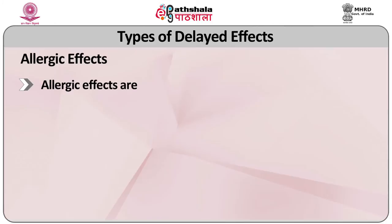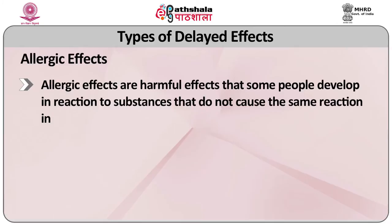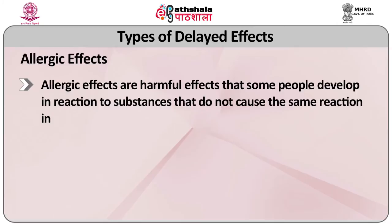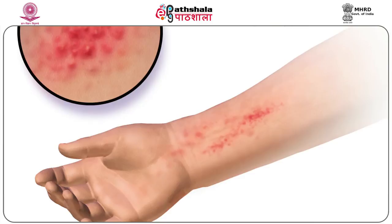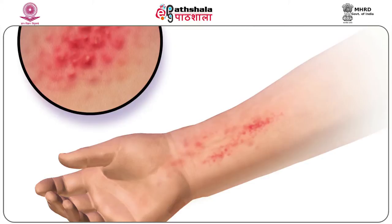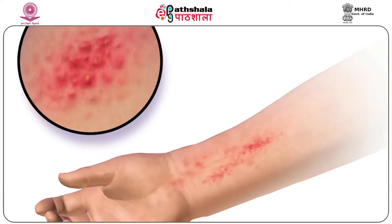Allergic effects are harmful effects that some people develop in reaction to substances that do not cause the same reaction in most other people. Allergic reactions are not thought to occur during a person's first exposure to a substance. The first exposure causes the body to develop repelling response chemicals to that substance; later exposure results in the allergic response. This process is called sensitization, and substances that cause people to become allergic to them are known as sensitizers. Certain substances cause many people to develop an allergic reaction — poison ivy, for example, causes a severe skin rash in many people. Other substances cause allergic reactions in only a few people.